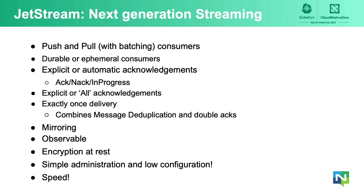You can have multiple kinds of acknowledgements in JetStream: an ack to signal correct processing of the message; a nak to signal that you could not process the message and it should not be re-delivered to you; and an in-progress acknowledgement, which means you need more time to process the message and do not want the server to re-send it. You can have explicit or cumulative acknowledgements — acknowledging just a particular message, or all messages older than the one you are currently acknowledging.